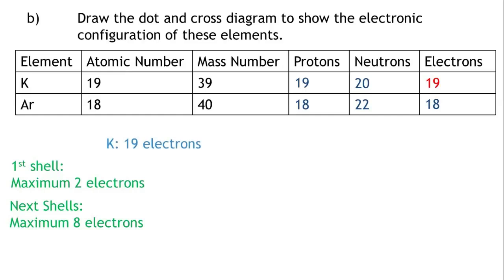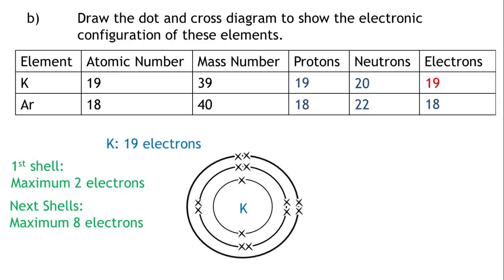Potassium has 19 electrons. 2 in the first shell, 8 in the second shell, 8 in the third shell, and 1 in the fourth shell.